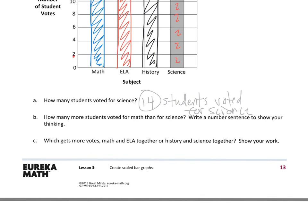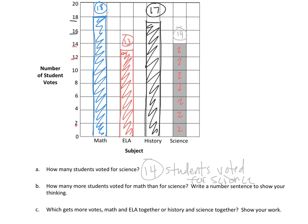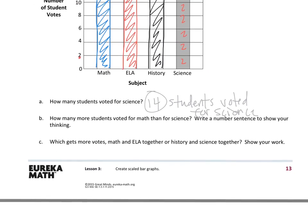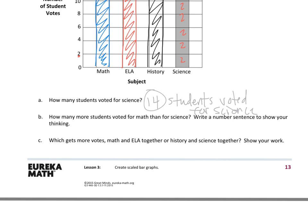How many more students voted for math than for science? Write a number sentence to show your thinking. And I know, just by looking up above, I see I have 18 for math and 14 for science. So, 18 for math, 14 for science. We want to know how many more voted. So we're going to find the difference. And that's going to be four. So then I would plug in my number sentence there. And there it is. Four more students voted for math than for science.